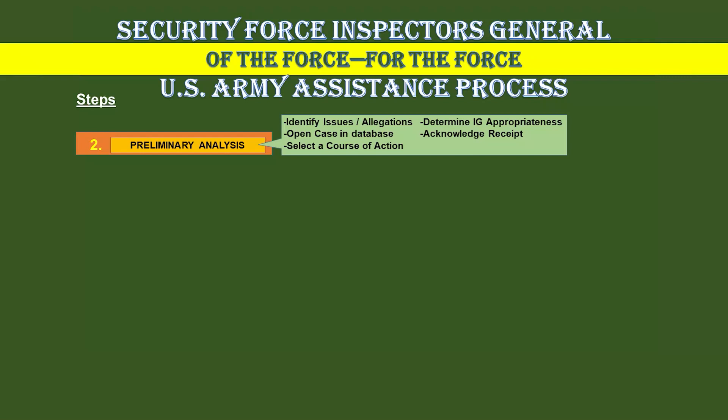Sergeant Anderson will now talk us through how she conducted Step 2 of the IGAP, Preliminary Analysis. First, I identified the issue — he wasn't getting paid. Then I determined IG appropriateness: yes, this request for assistance is appropriate for the office of the IG to handle. Next, I opened the case in IGARS, the Inspector General Action Request System, and entered all the information documented on the DA Form 1559. Although your country may not have a digital database, we can assist with establishing systems that work for your IG system. The acknowledgement of receipt was done in person since he came into the office. My course of action was to conduct an Inspector General Assistance Inquiry. This ends my preliminary analysis.